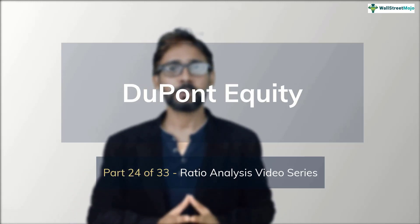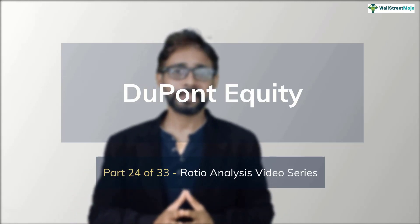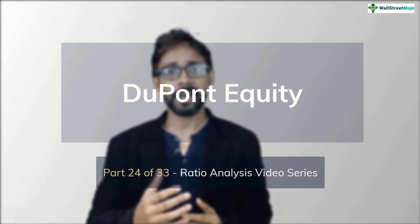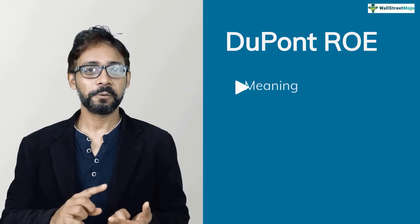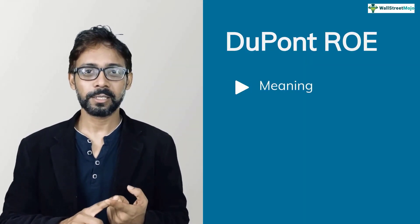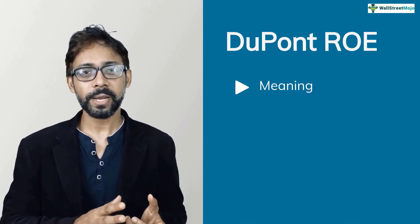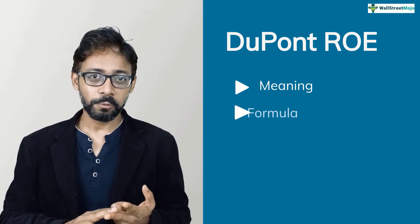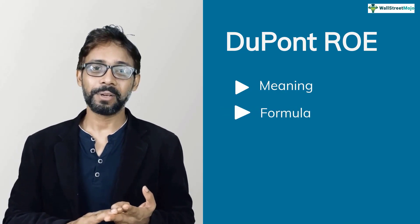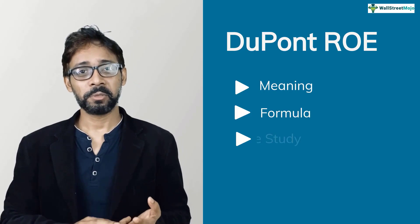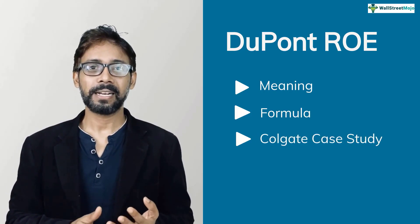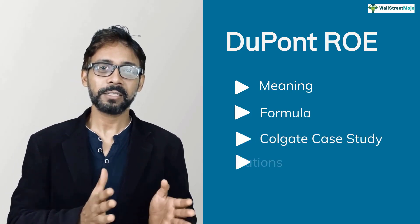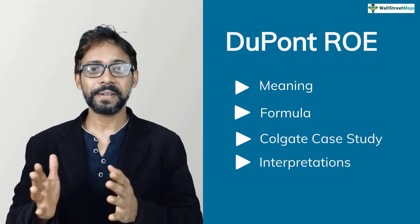Breaking this ROE in this way helps us understand the reasons why the ROE is higher or lower. In this tutorial, we basically have four objectives. First, we'll understand the nuances of DuPont ROE. Number two, we'll look at its formula and calculations. Number three, we'll calculate DuPont ROE on Colgate. And number four, we'll look at its interpretation and uses.